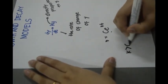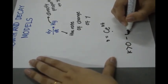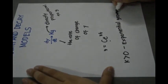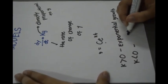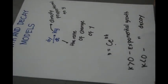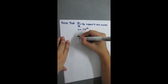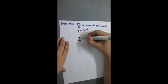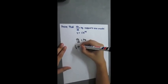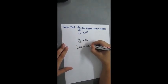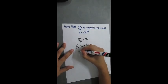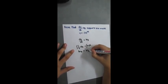When k is greater than 0, exponential growth occurs, and when k is less than 0, exponential decay occurs. For the differential equation dy over dt equals k times y, we separate variables to get 1 over y dy equals k dt. Then we integrate, which results in ln of y equals kt plus c.